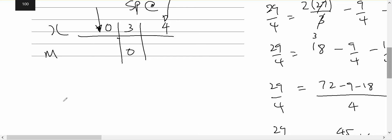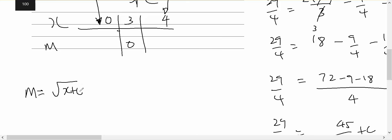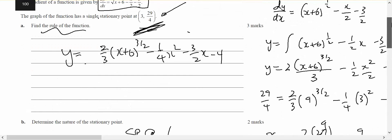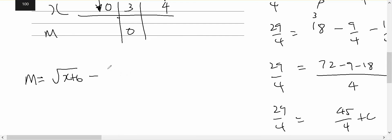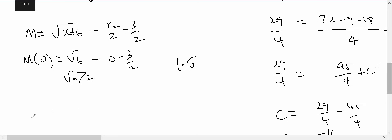I know the gradient equals the square root of x plus six, minus x on two, minus three on two. The gradient when x equals zero will be root six, minus nothing, minus three on two. Three on two is 1.5, and root six is bigger than two, therefore that's going to be positive.